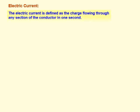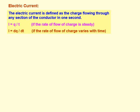The first topic of this chapter is electric current. In class 10, electric current is simply defined as the rate of flow of electric charge through the conductor. Current is defined as the charge flowing through any section of the conductor in one second.